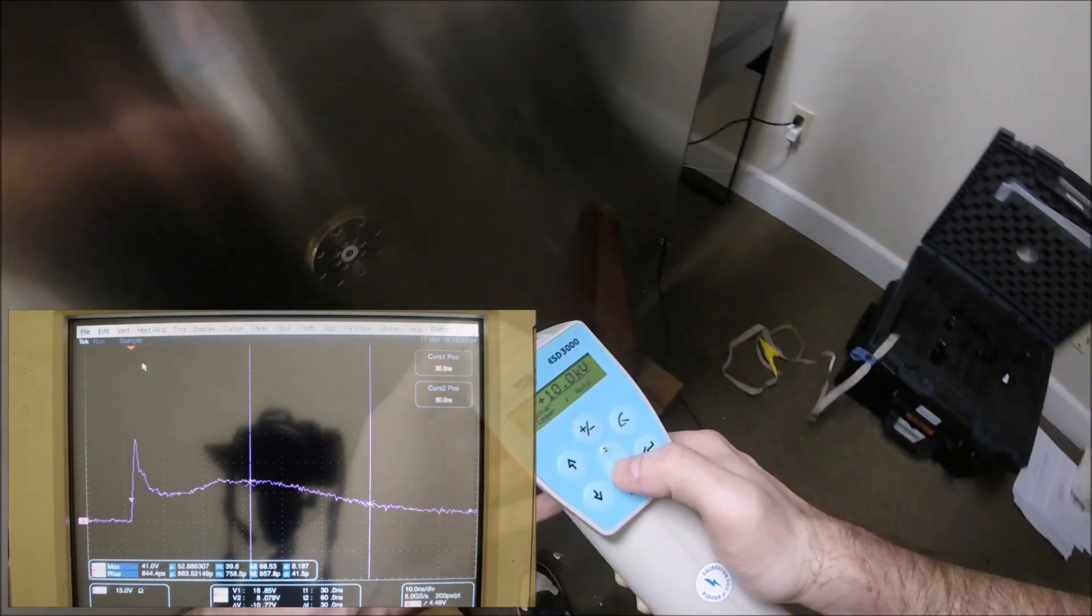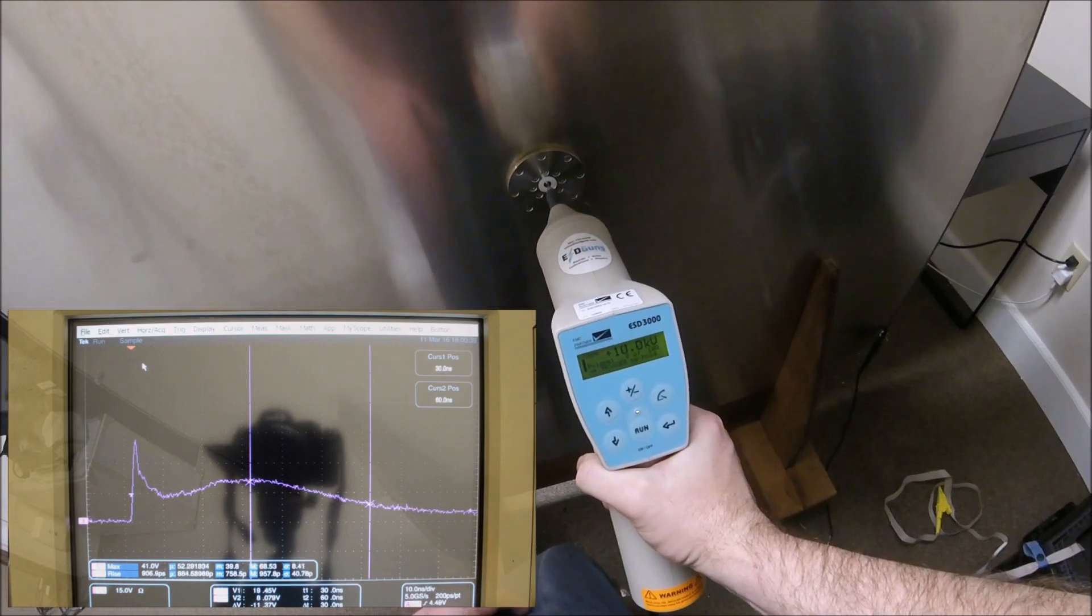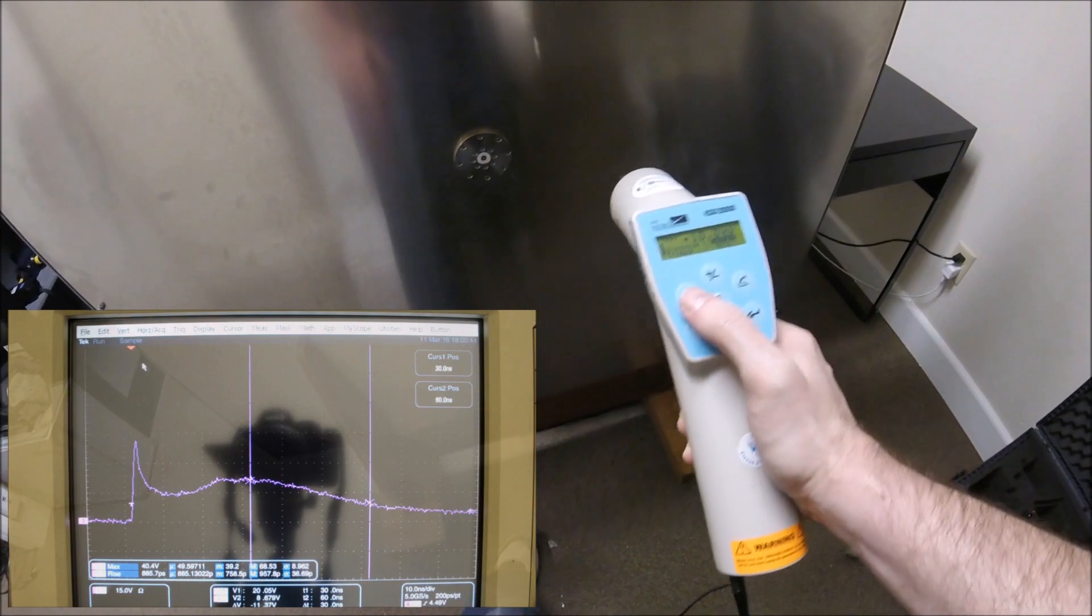The ESD 3000 and the remainder of the units that we've covered have either a 9 or 10 kV output capability in contact mode.